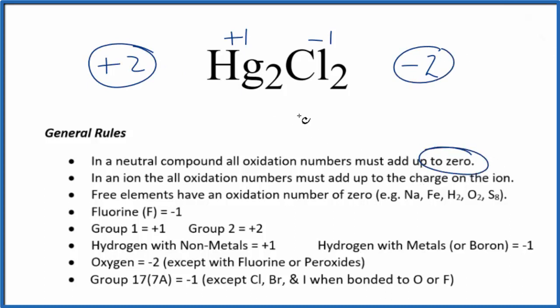This is Dr. B with the oxidation numbers for each element here in Hg2Cl2, mercury one chloride.